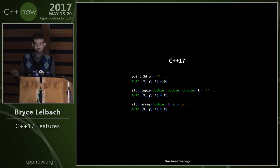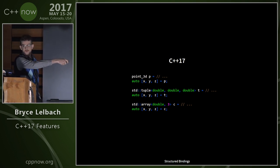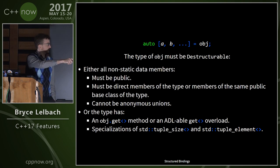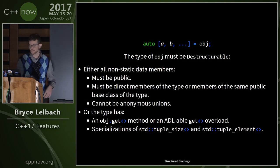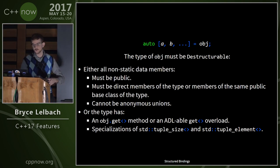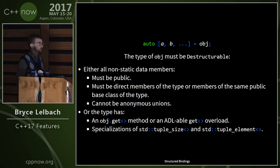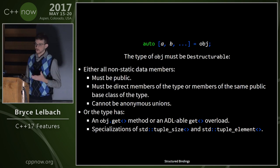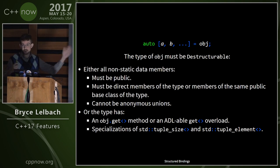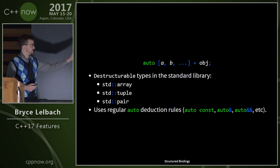In C++17 we have structured bindings, which take objects like Point3D, tuples, and arrays and destructure them into components. The syntax uses auto followed by a list of names, then the object. The object must be destructurable: it needs to be struct-like with all non-static data members public and direct members of the type, or you can write specializations of customization points to make any type work. Destructurable types in the standard library include std::array, std::tuple, and std::pair.